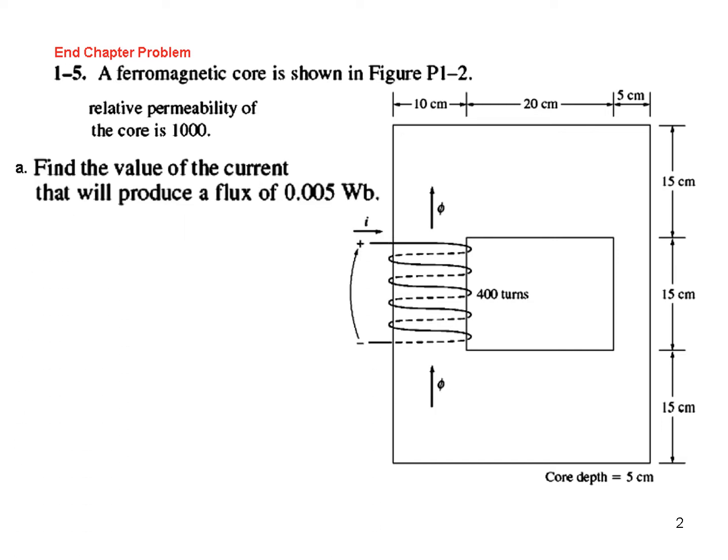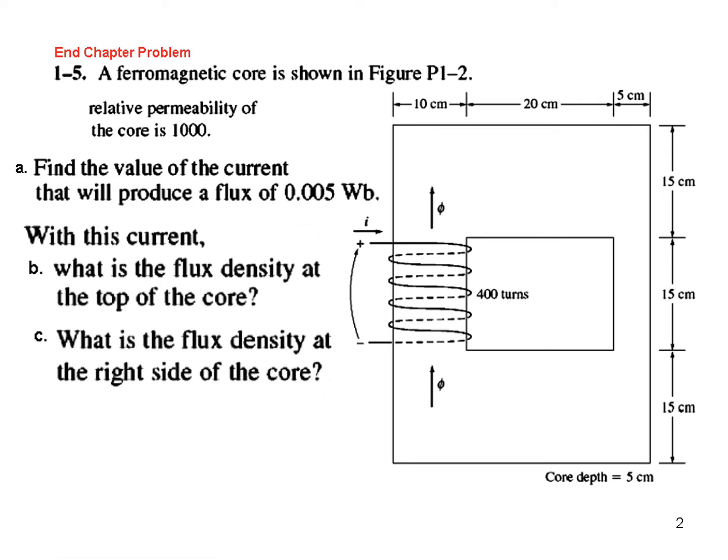The first part is find the value of the current that will produce a flux of 0.05 weber. And the second part is for with this current that we find from here, what is the flux density at the top of the core?